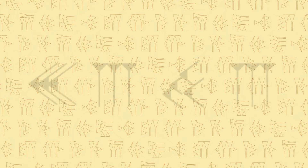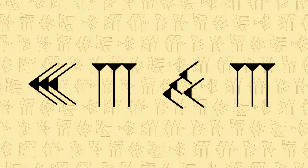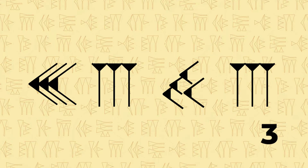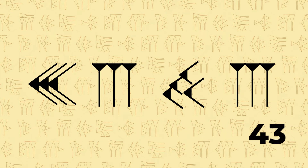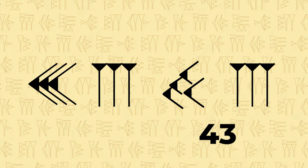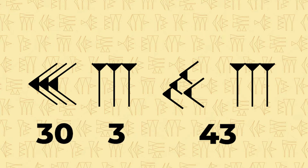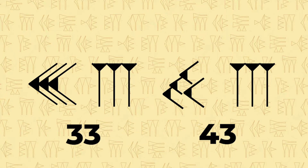Here's a quick example — what number would this be? Starting from the symbols to the right, we have three line wedges, meaning the number 3. Beside that are four corner wedges, each worth 10, giving us 40, so we have 43 here. To the left of this is the sexagesimal place, meaning this number is over 60. On this side we have three corner wedges and three line wedges — the corner ones are worth 10, so that's 30, plus the 3, makes 33. So this sexagesimal number is 33, 43.